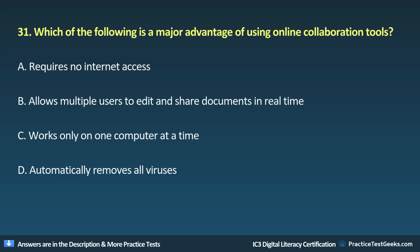Question 31: Which of the following is a major advantage of using online collaboration tools? A. Requires no internet access. B. Allows multiple users to edit and share documents in real time. C. Works only on one computer at a time. D. Automatically removes all viruses.